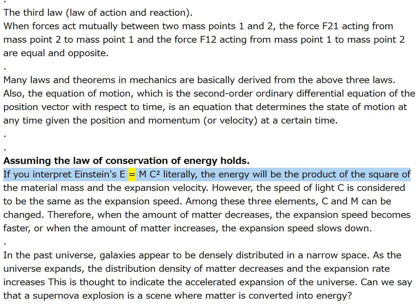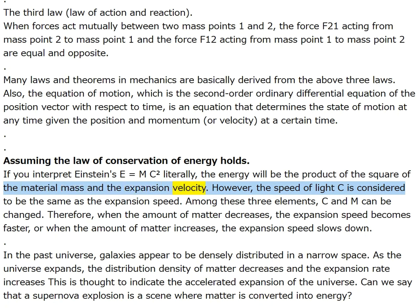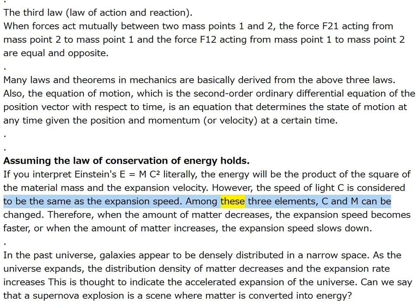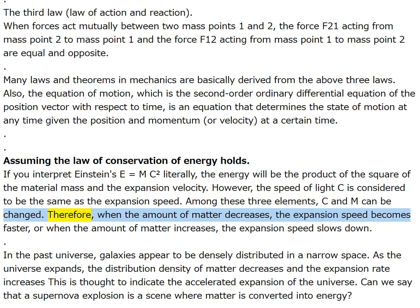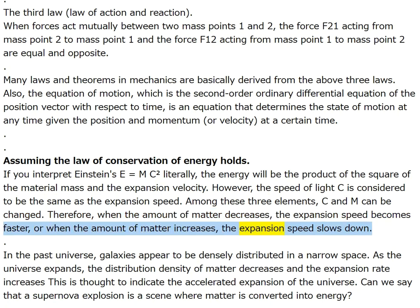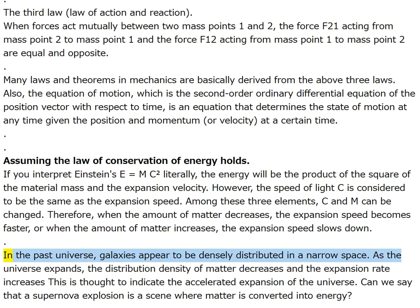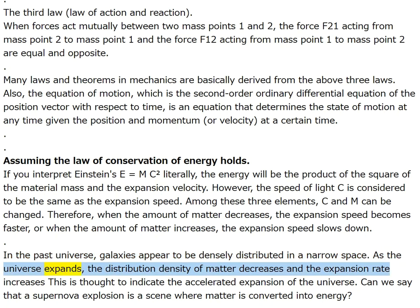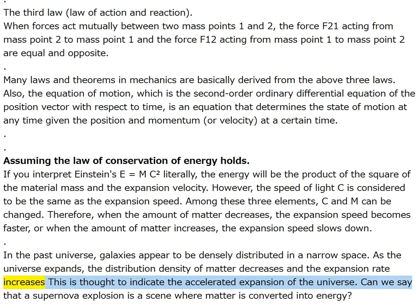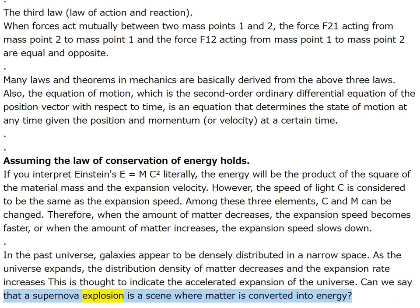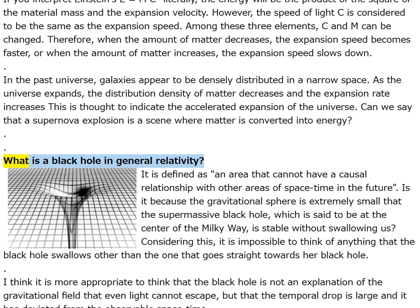Interpreting Einstein's E = mc² literally: energy is the product of material mass and the square of expansion velocity. Since c and m can both change, when the amount of matter decreases the expansion speed becomes faster, and when matter increases the expansion speed slows down. As the universe expands, matter distribution density decreases and the expansion rate increases — indicating accelerated expansion of the universe. A supernova explosion can be seen as a scene where matter is converted into energy.